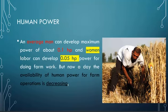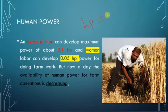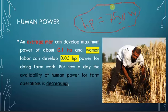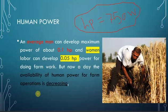The average man can work or give power of about 0.1 horsepower (HP). The horsepower is equal to 750 watts, and it is a power unit like watt and kilowatt. The human can develop half of this power, about 0.05 HP. Nowadays, the availability of human power for farm operations is decreasing.